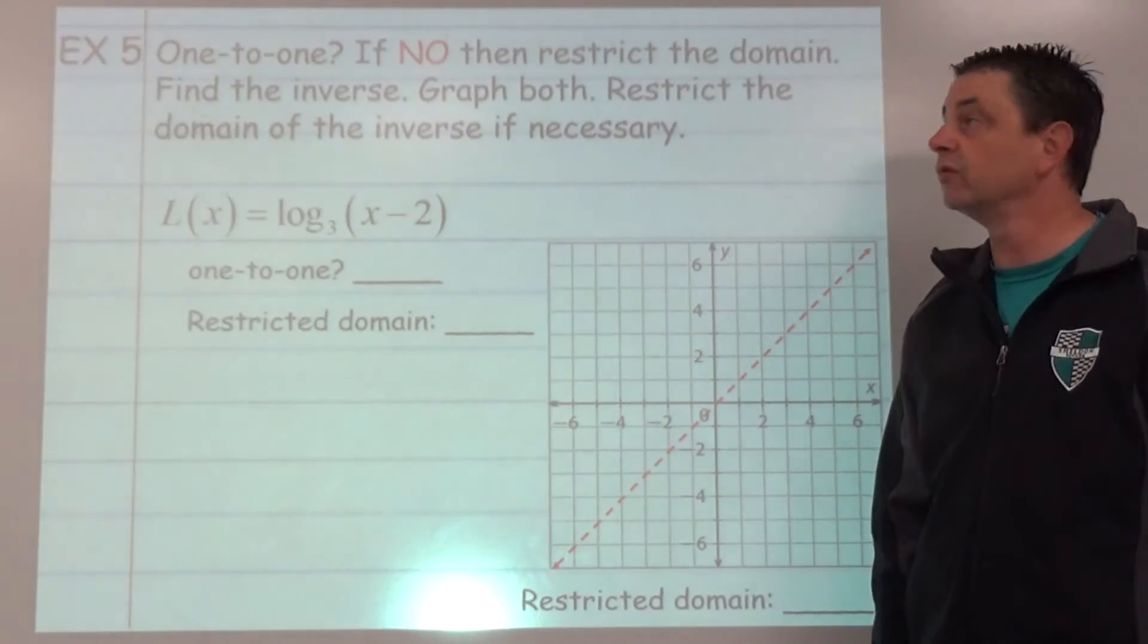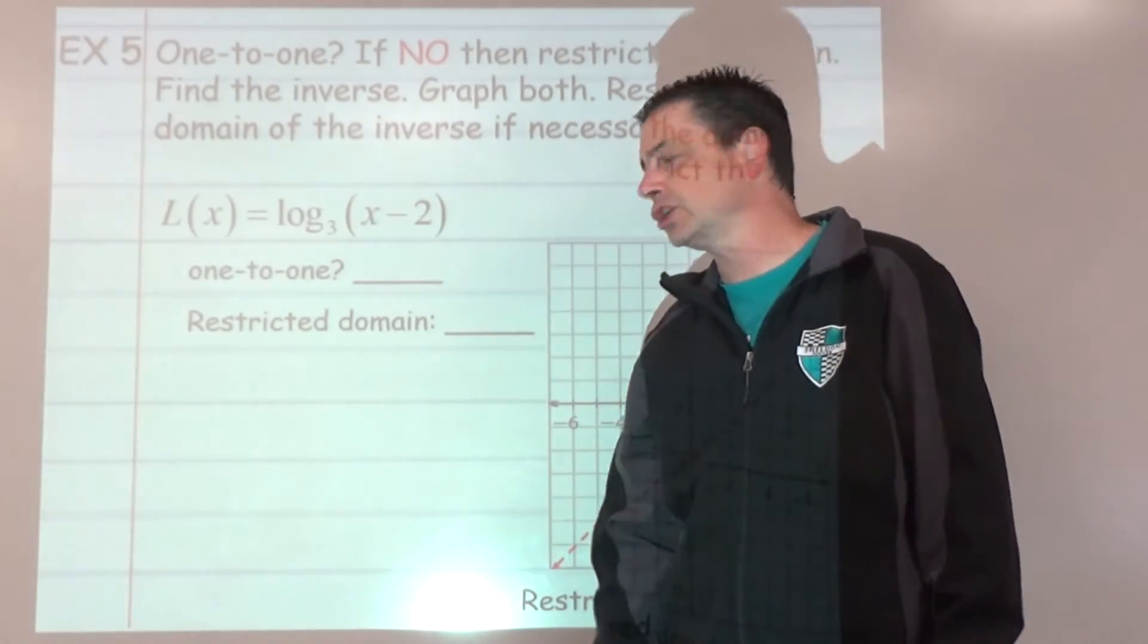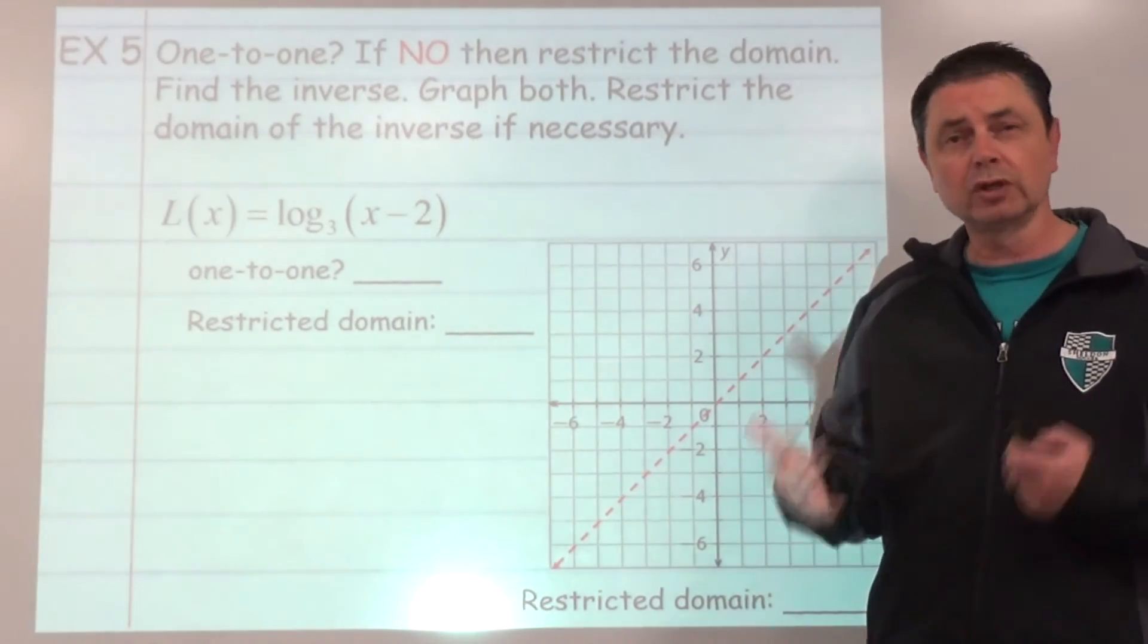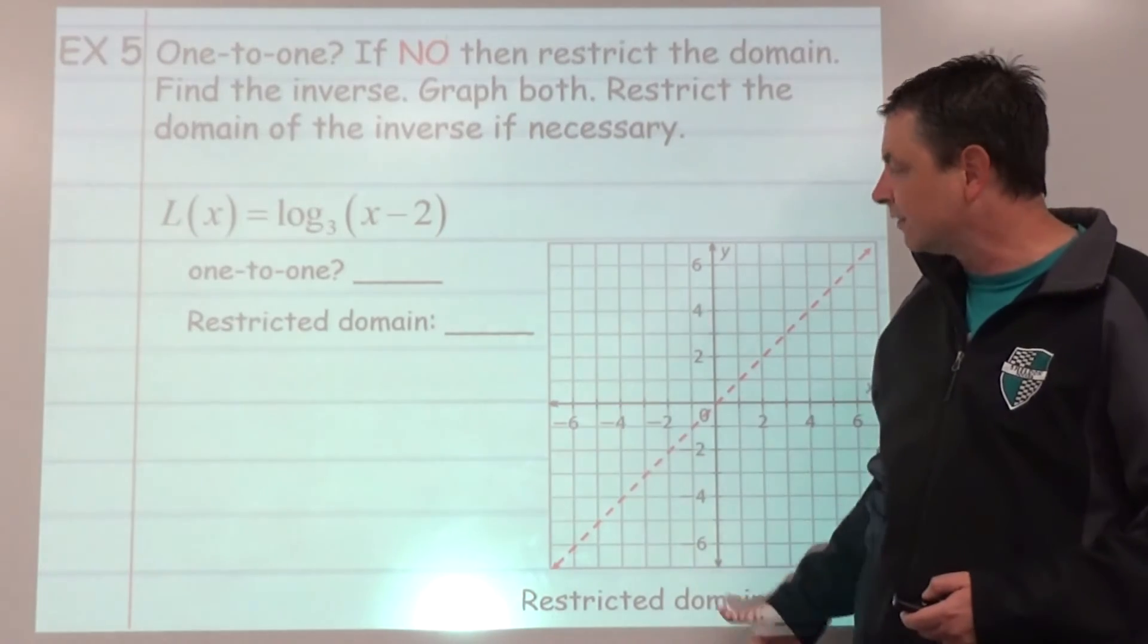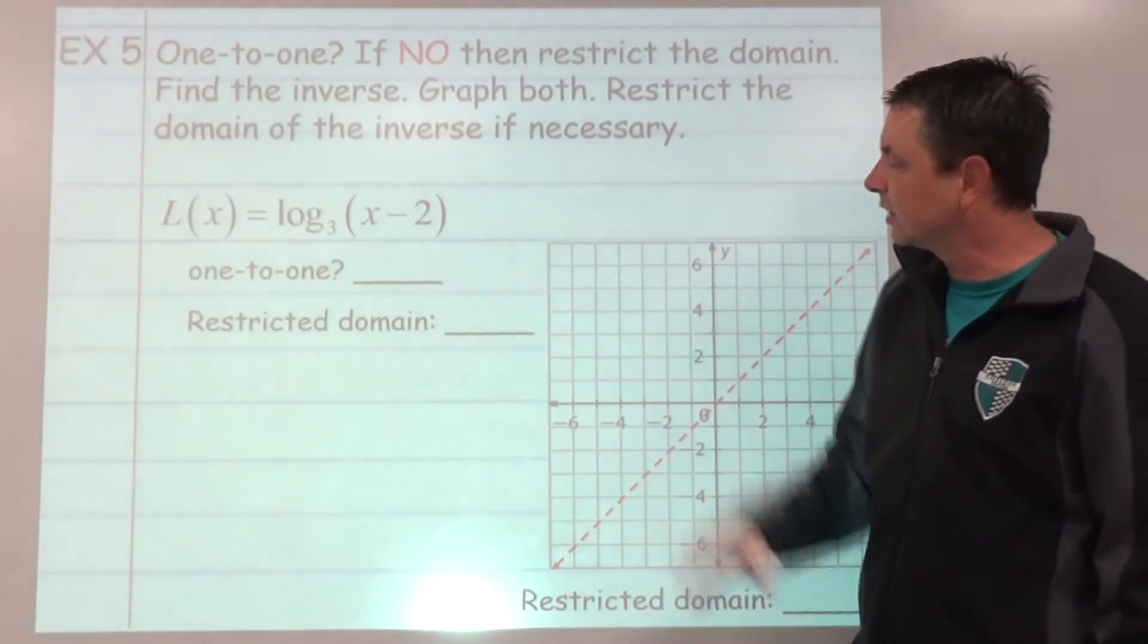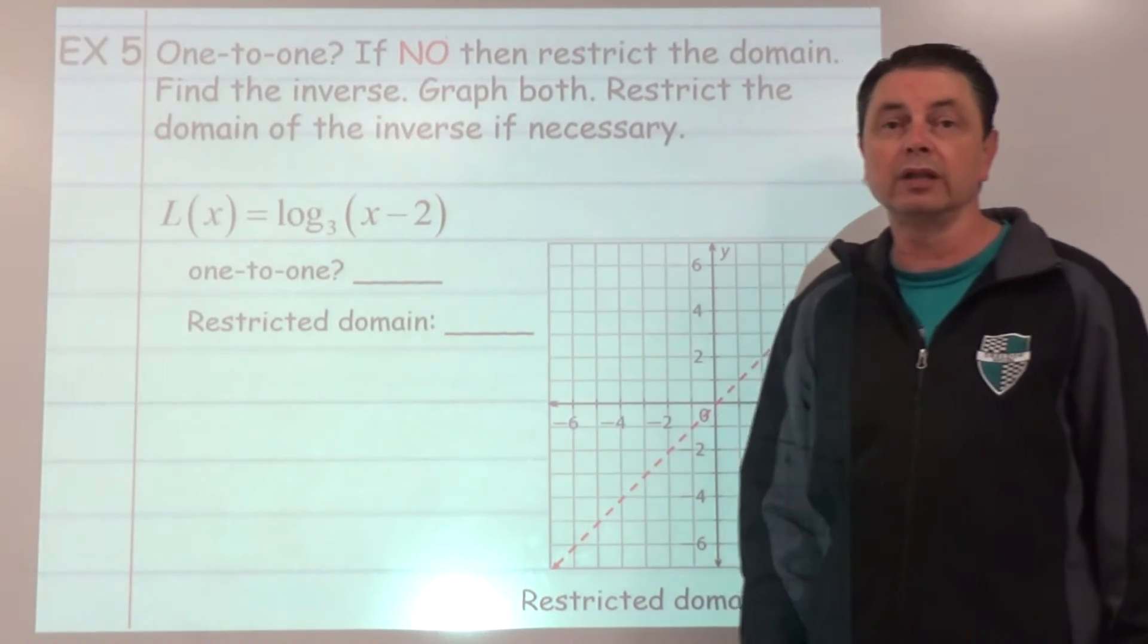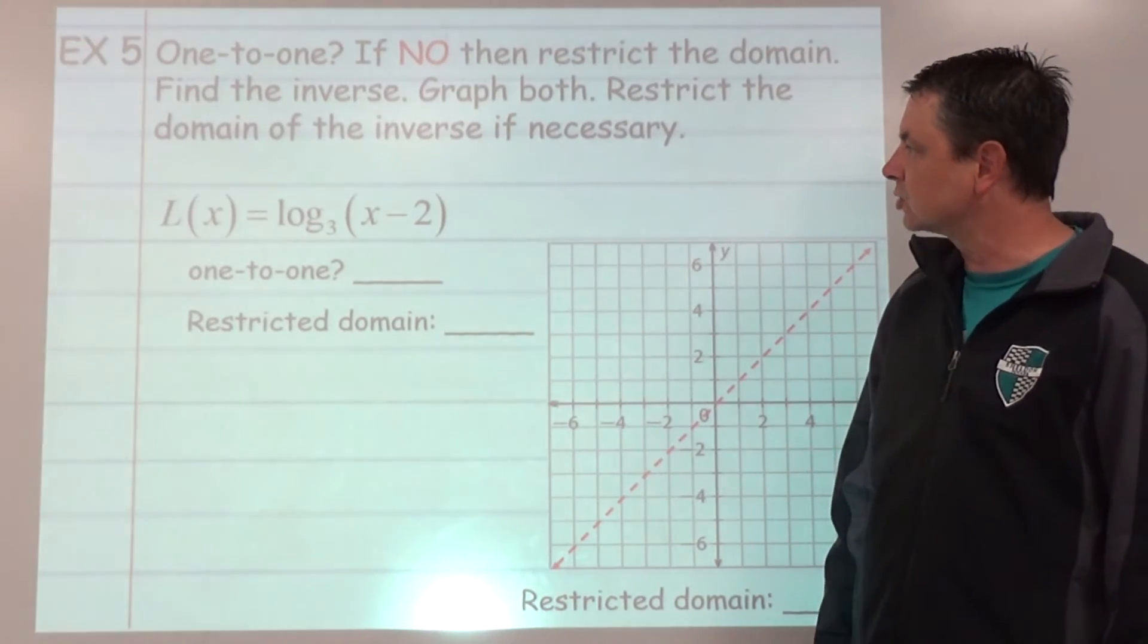We're going to finish with the review problem. This is example number 5 where we've got an existing function and we want to go through all the process of looking at inverse. Do we need to restrict domain? Graphing them. Do we need to restrict domain of the inverse? It's a little bit more challenging than ones we've worked out in the past, but I think we can do it. Let's give it a try.